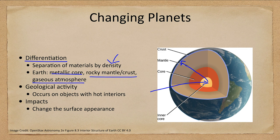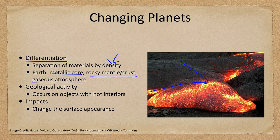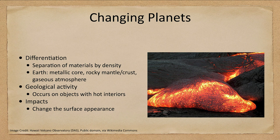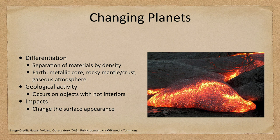It's not just differentiation that changes planets initially — after they have formed they can also have different geological activity. Any object with a hot interior, such as Earth, will have this as a possibility. We see a lava flow out in Hawaii where material from the upper mantle that is molten flows up through volcanoes and gives us new surface material. It is a way of changing the surface of a planet, and some planets are far more active than others — Earth being very active, our Moon being very inactive and essentially unchanged for billions of years, and other planets in between. We'll also see some interesting things when we look at the moons of the different planets.